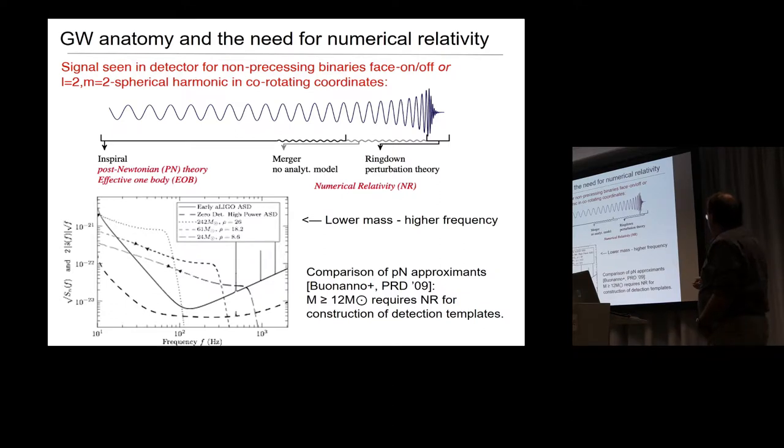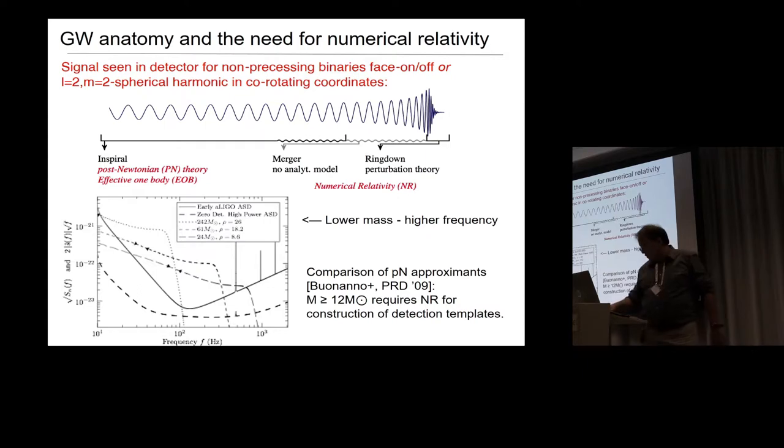When the objects are far away from each other, what we call the inspiral, then you can use post-Newtonian perturbation theory to describe the signal or a certain variant of this, which is called effective one-body description. But then when the objects are closer to each other, a few orbits before they merge, this approximation breaks down. There's no analytical model. And you have to use numerical relativity, which means solving the Einstein equations as partial differential equations to get your output. And at the end, you can use partial results again from perturbation theory for this ringdown.